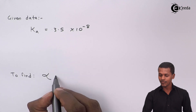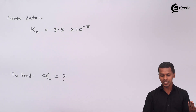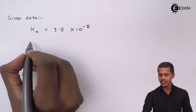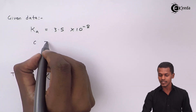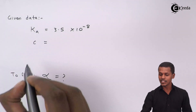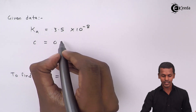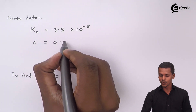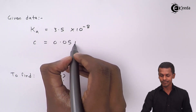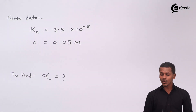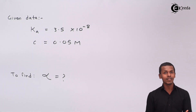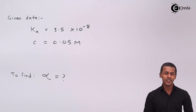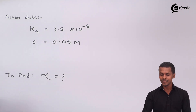The concentration has also been given to us as 0.05 molar. So this is what they have given us, and we have to calculate alpha. It is very easy to calculate, so let us do this one.